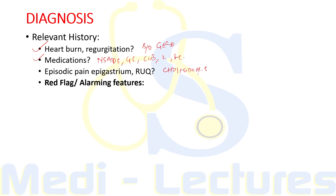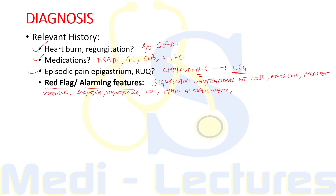For suspected cholelithiasis, we will advise sonography of abdomen. We have to particularly ask about certain red flag and alarming features: significant unintentional weight loss, presence of anorexia, persistent vomiting, dysphagia or odynophagia, unexplained iron deficiency anemia, family history of GI malignancy, or any palpable mass or lymphadenopathy. If any of these red flag features are present, we will have to consider evaluation for malignancy.